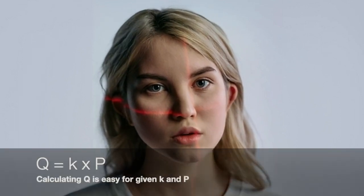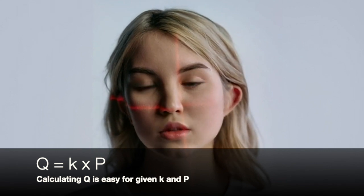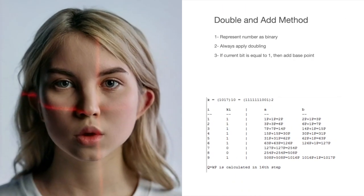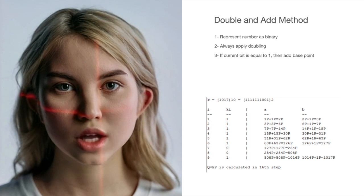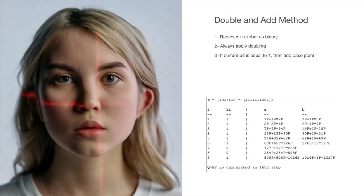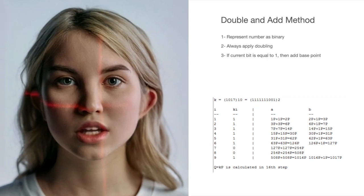In other words, it requires finding the exponent K that, when applied to the base point P, results in the target point Q. However, calculating Q is easy if you know both K and P, as it can be efficiently computed using the double-and-add method, which involves doubling points and adding them together according to the binary representation of K.